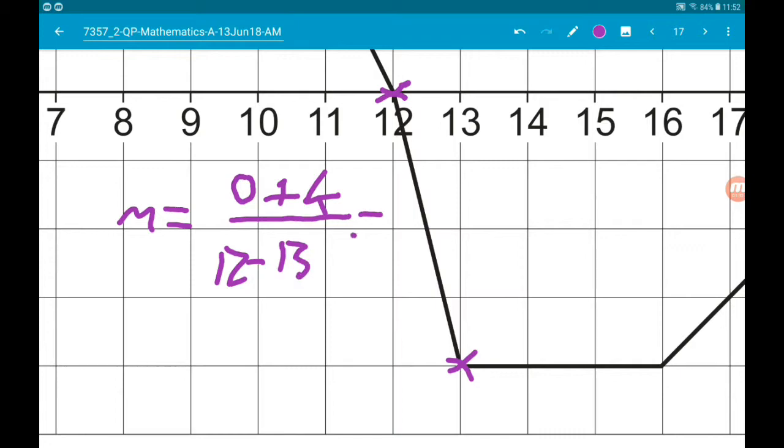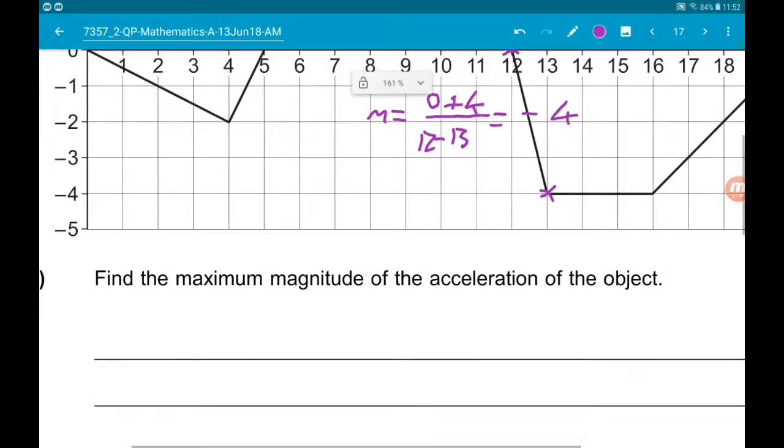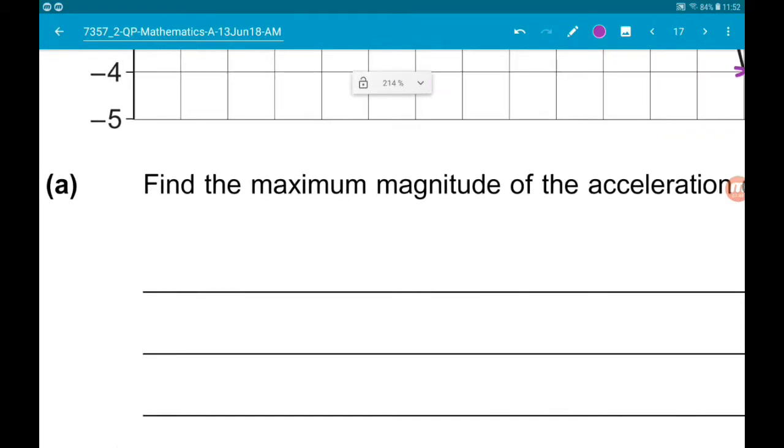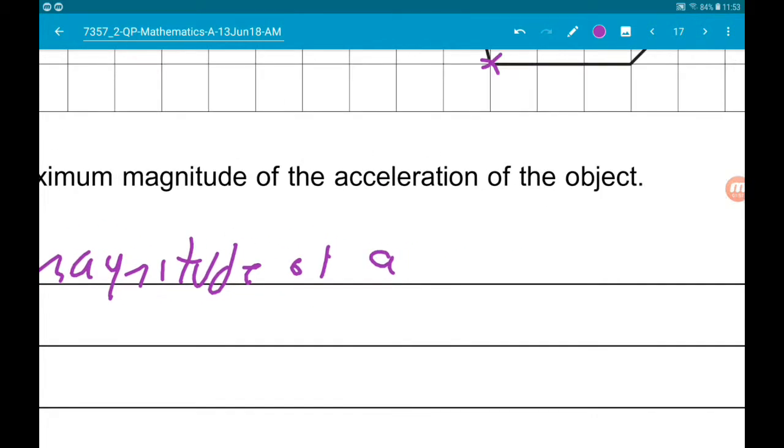And that is gonna give us negative 4. So the maximum magnitude of a is 4, positive 4. The reason it's negative is because we are decelerating, but that is still a type of acceleration.